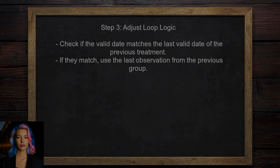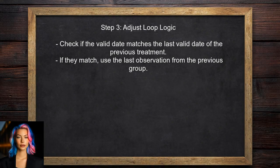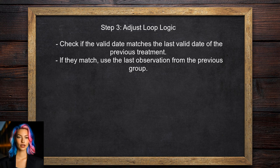Now, let's adjust the logic inside the loop. When the treatment ID changes, the user should check if the valid date matches the last valid date of the previous treatment. If it does, reference the last observation from that group instead.